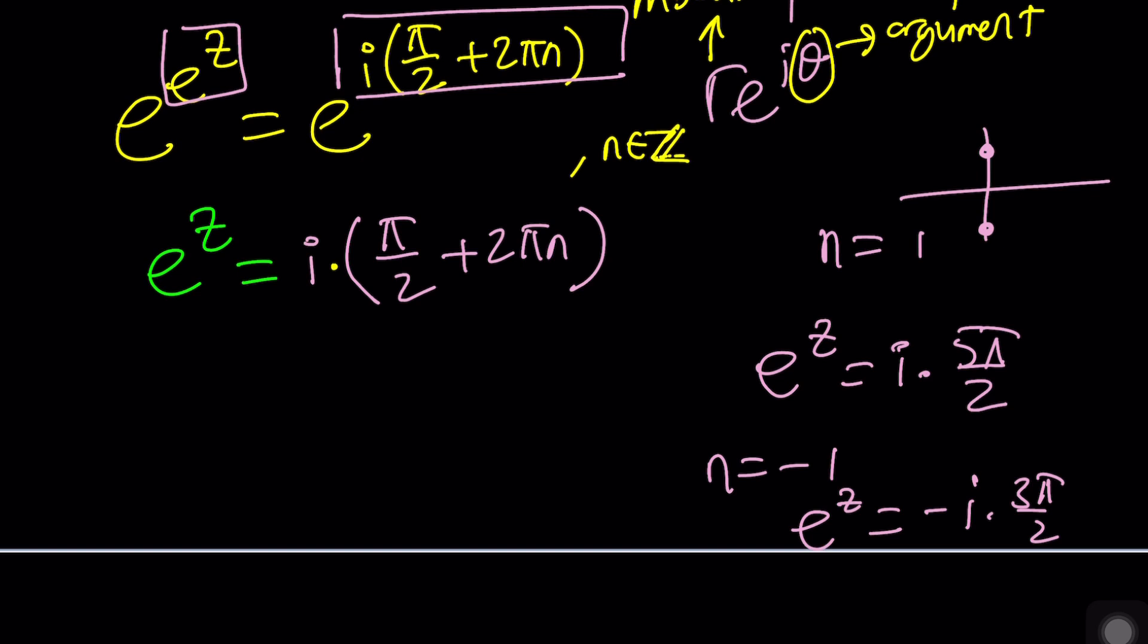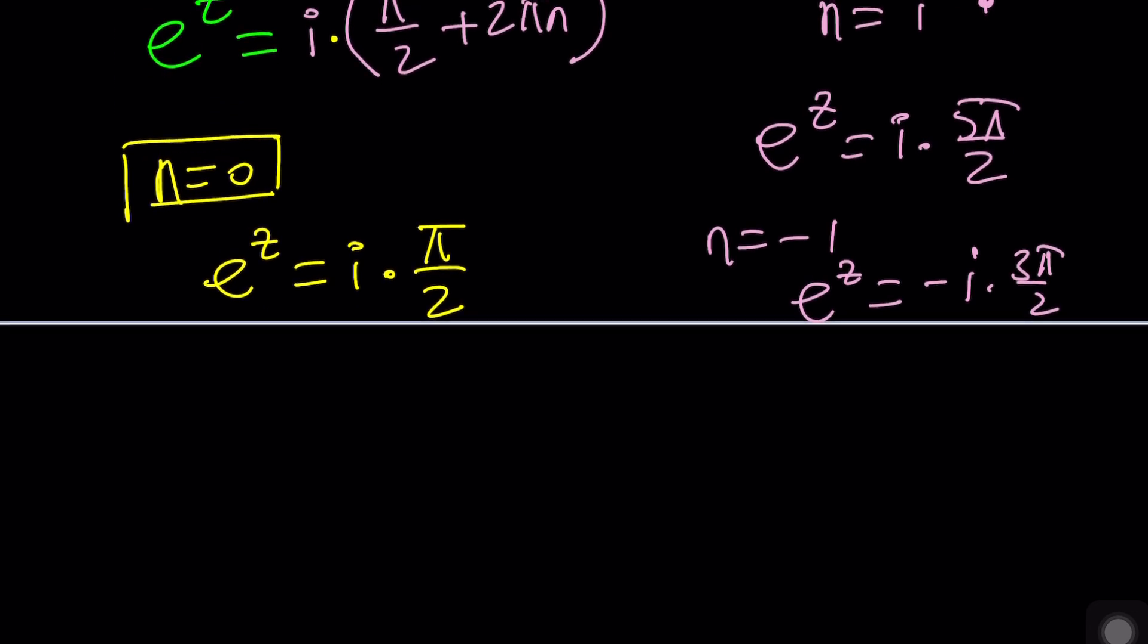And I'm even going to say at some point, okay suppose n is equal to zero. What happens if n is equal to zero? Let's start with that. If n is equal to zero then we're going to get e to the z equals i times pi over two and that should be the principal value, right? Because we're kind of going with the smallest value between negative pi and pi. By the way that's a half open interval because you can't include both negative pi and pi, and one of them is included. I can't remember which one, I think pi is not and negative pi is included. Correct me if I'm wrong.